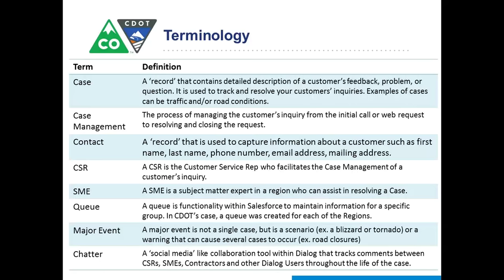A queue is really just a list of cases that have not yet been claimed to be worked. There are queues for each of the regions including headquarters here at CDOT. A major event is not a single case — it's generally when something major is going on and generating a high call volume or a high volume of inquiries. Rather than create 100 different cases for those incoming calls, we create a major event. As you take that call, you can simply log a call against it, which allows us to track the number of calls related to a major event without requiring a lot of extra work.